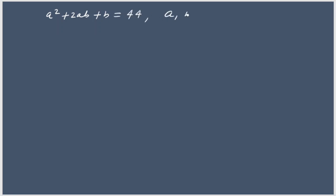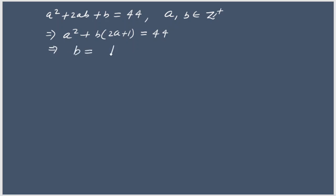Let's start Method 2. We have the problem a² + 2ab + b = 44, where a and b are positive integers. We can take b common from the last two terms and write a² + b(2a + 1) = 44. Solving for b, we get b = (44 − a²) / (2a + 1).